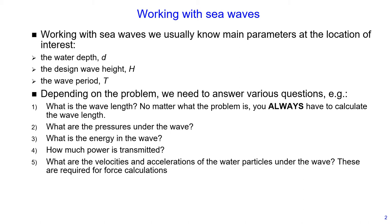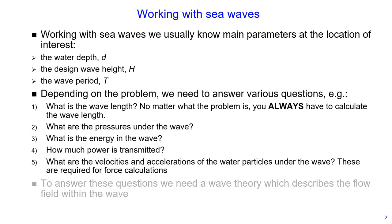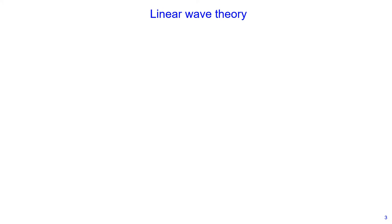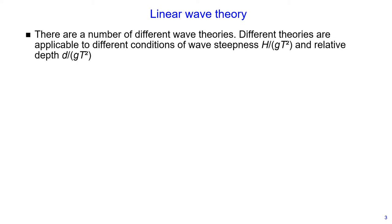To answer these questions, we need a wave theory which describes the flow field within the wave. There are a number of different wave theories, applicable to different conditions of wave steepness and relative depth. Wave steepness is defined as the ratio of wave height divided by gravity and divided by wave period squared. And relative depth is defined as water depth divided by gravity and divided by wave period squared.